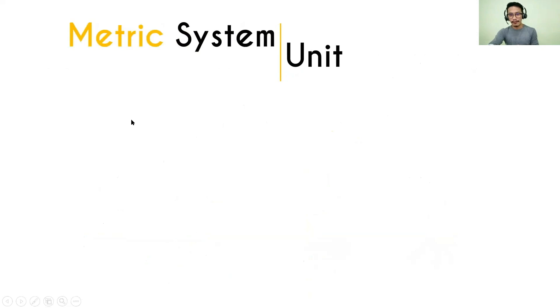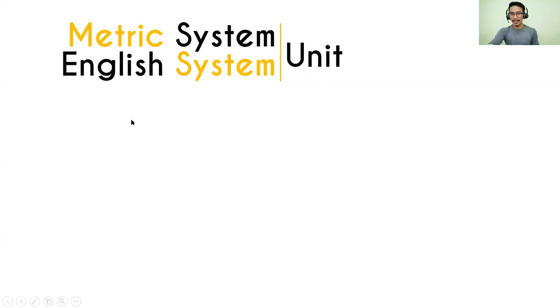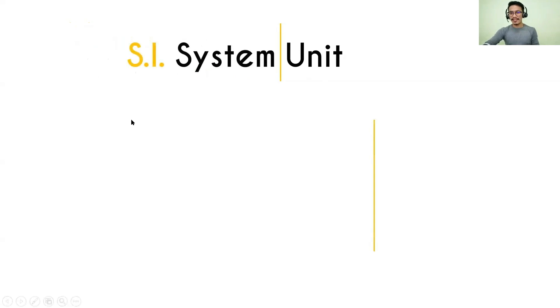That is why we have systems of standards. We have two systems: the metric system and the English system. We will talk about the metric system this morning; the English system will be next meeting. Based on the metric system, scientists created standards called SI units — the standards used by the scientific community.